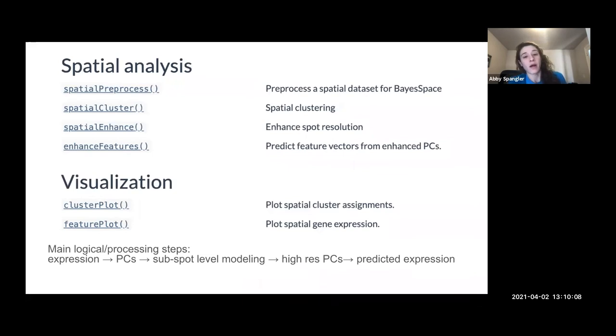So I'll walk through how you use BaySpace. They divide their functions into a couple of different categories. One is probably the most important, the spatial analysis. So the first function is spatial preprocess, which is basically preprocessing the data. It will log normalize it, find by default the top 2000 highly variable genes, and then calculate PCs or do PCA reduction on that.